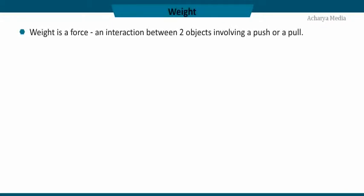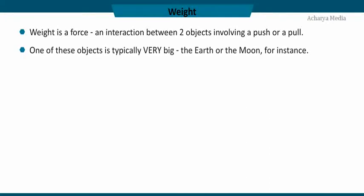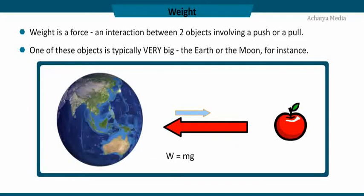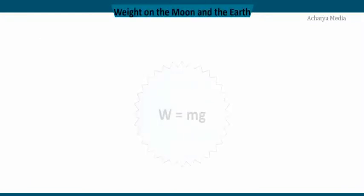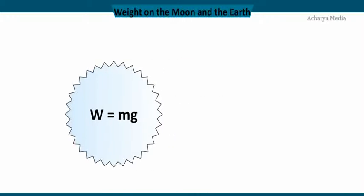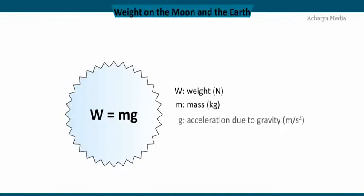Weight is a force — an interaction between two objects involving a push or a pull, where one object is typically very large, such as the earth or the moon. The weight of a body on the earth is defined as the force with which it is attracted by the earth. The weight W of a body of mass m on the surface of the earth is W equals mg. The unit of weight is Newton, or kilogram·meter per second squared.